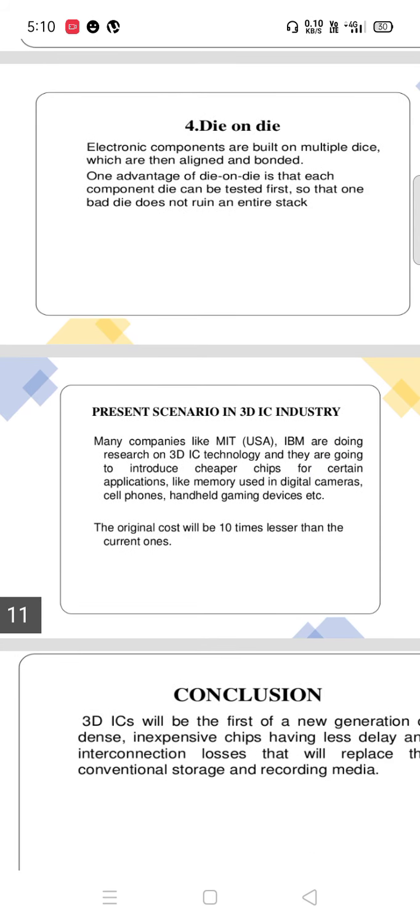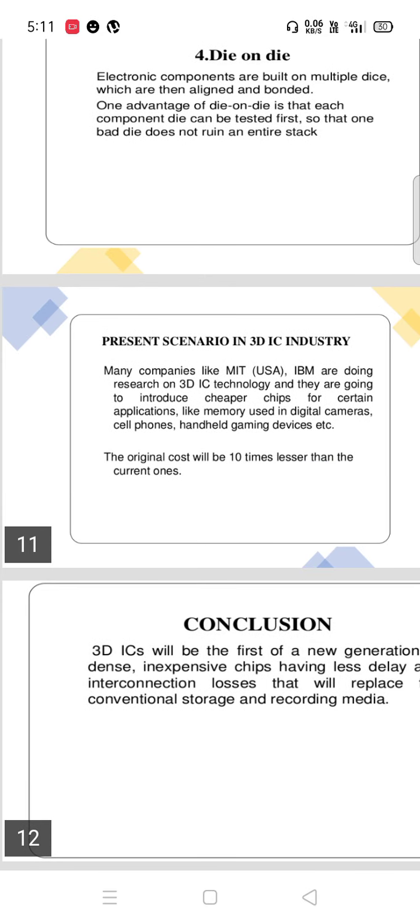These are the four steps of manufacturing 3D integrated circuits. Present scenario in 3D IC industry. Many companies like MIT and IBM are doing research on 3D IC technologies, and they are going to introduce cheaper chips for certain applications like memory used in digital cameras, cell phones, handheld gaming devices, etc.